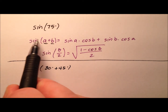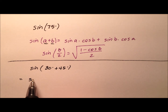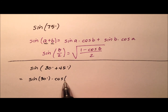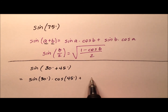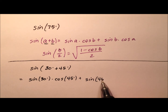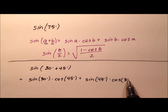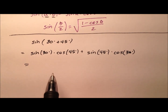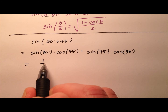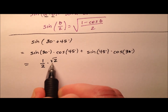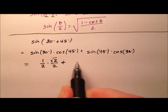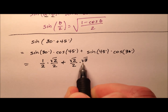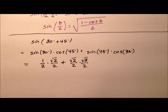So using the sum identity for sine, let's expand this out as the sine of 30 degrees times the cosine of 45 degrees, plus the sine of 45 degrees times the cosine of 30 degrees. The sine of 30 is one half. The cosine of 45 is the square root of 2 over 2. And the sine of 45 is the square root of 2 over 2, times the cosine of 30, which is the square root of 3 over 2.